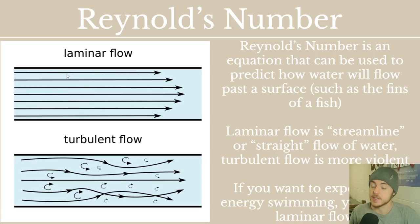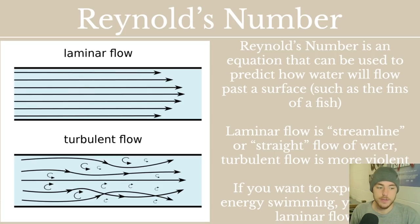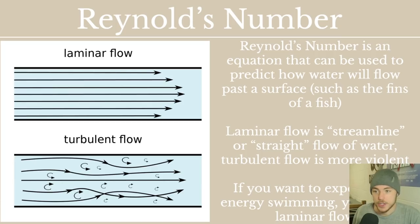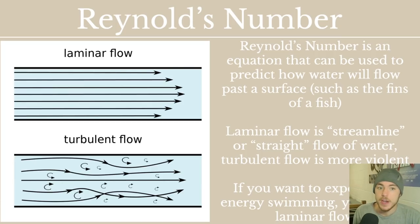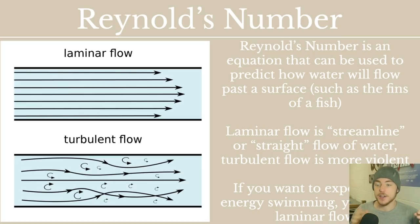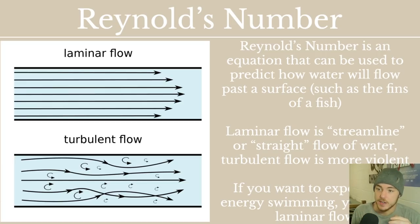Laminar flow is when the water flows by very nicely, very straight, and stays organized. Turbulent flow is when the water sort of collapses in on itself. If you're a fish, you always want to expend less energy to swim — it's already hard enough, so why make it harder? You want laminar flow going along your body, not turbulent flow. If you're creating all that turbulence behind you, you're creating that pressure gradient and greater friction, increasing those drag forces and costing yourself more energy to swim.